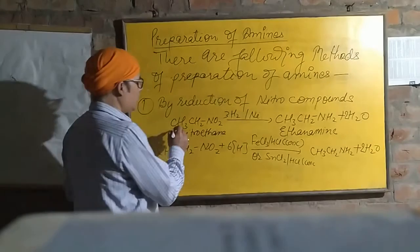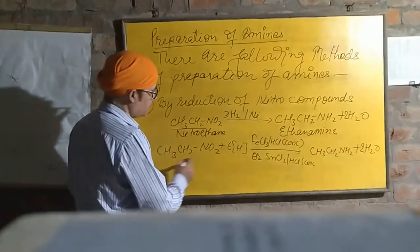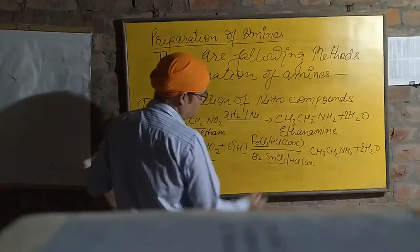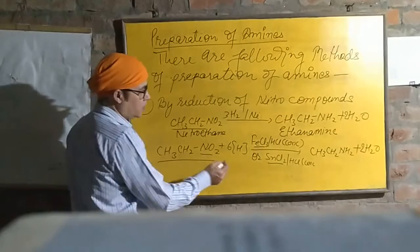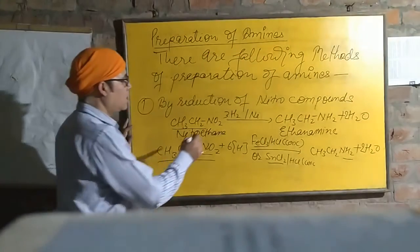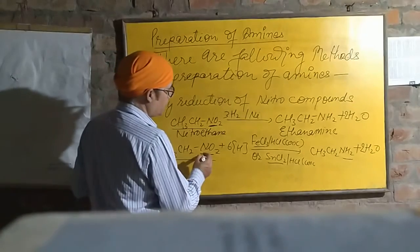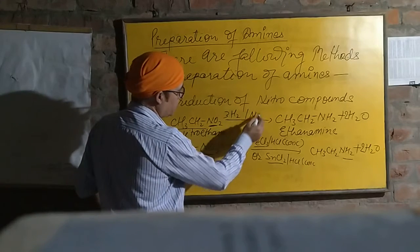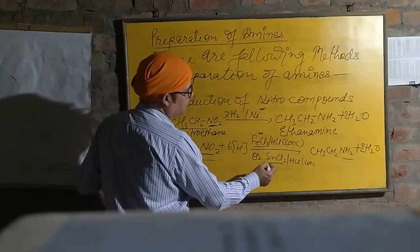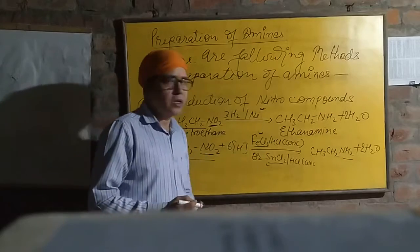Any alkyl group here could be. And similarly, the next method of reduction is with the help of ferric chloride and SnCl2. We can reduce nitro compound into amine. This way, by the reduction of nitro group, with the help of hydrogen in presence of nickel or FeCl3 and SnCl2, we can reduce nitro compound into amine.